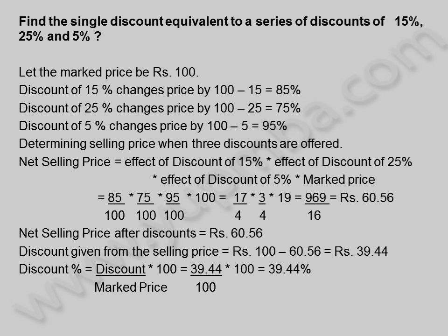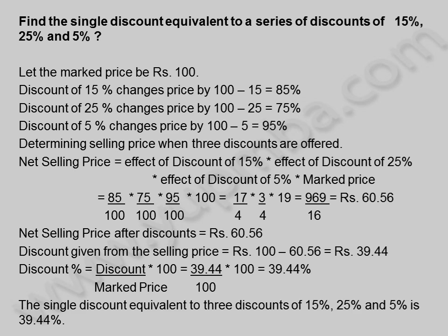Discount percentage is equal to discount by marked price into 100, is equal to 39.44 by 100 into 100, is equal to 39.44%. The single discount equivalent to 3 discounts of 15%, 25% and 5% is 39.44%.